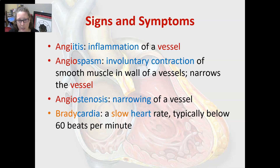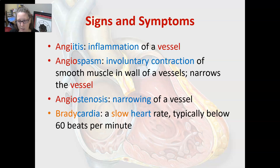Angiitis is an inflammation of a vessel, and angiospasm is an involuntary contraction of the smooth muscle in the walls of a vessel — it narrows the vessel. Angiostenosis is a narrowing of a vessel, so hopefully you get that 'angio' means vessel. Bradycardia is a slow heart rate, typically below 60 beats per minute, because 'brady' means slow and 'cardiac' means heart.